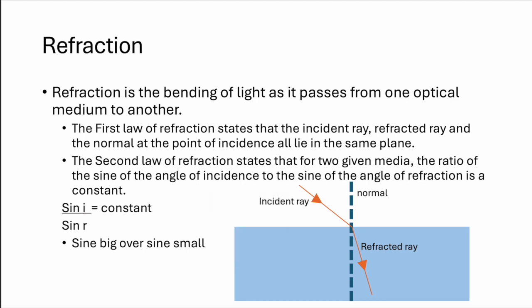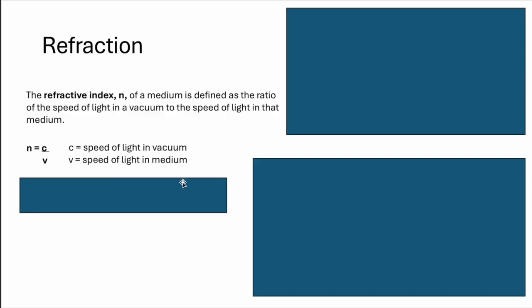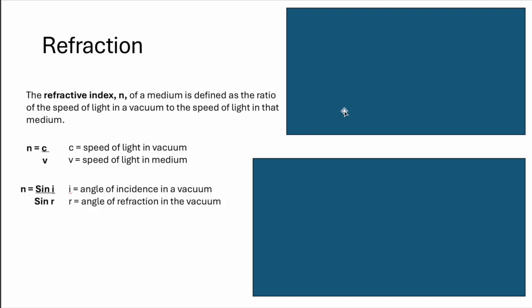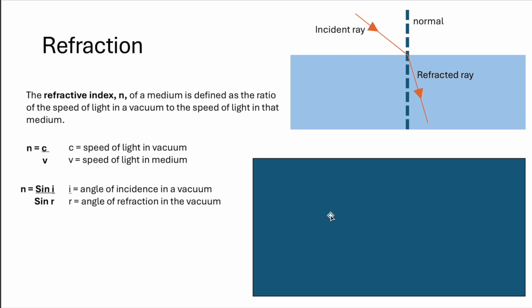And talking about refractive index, it also comes with this formula n equals to c over v, speed of light in vacuum against the one in the medium. And so the constant can be also used interchangeably with this because it's talking about the refractive index. So n also equals to sine i over sine r.